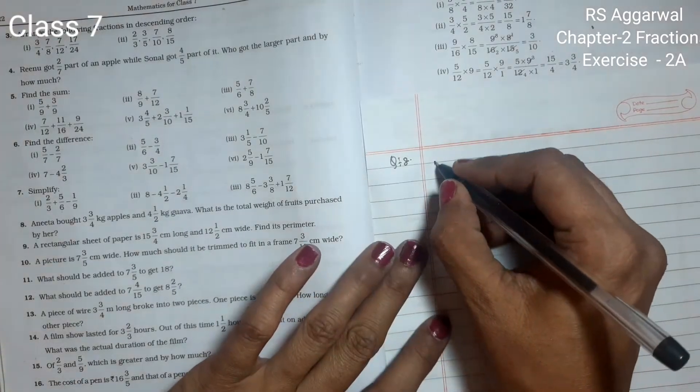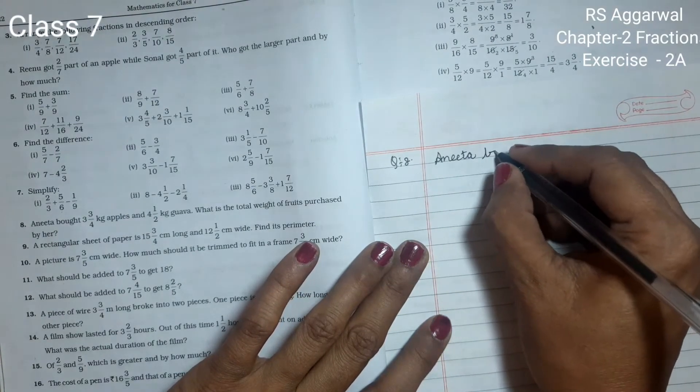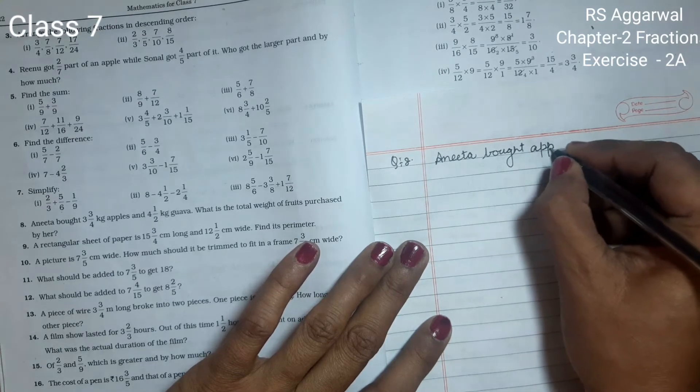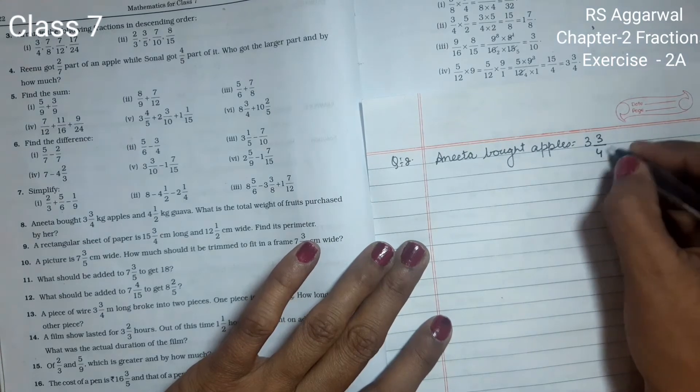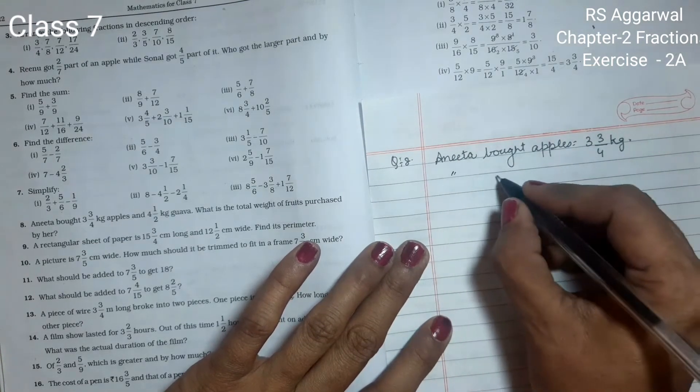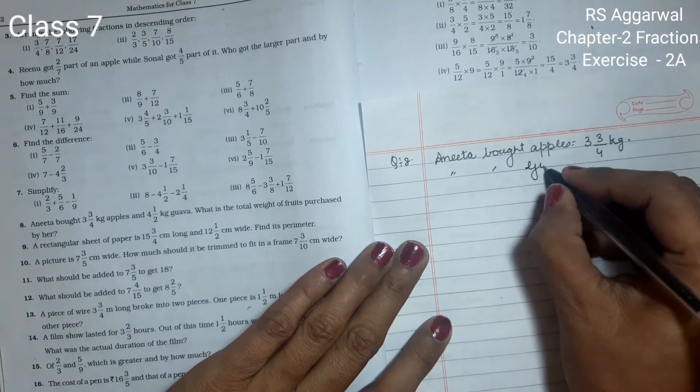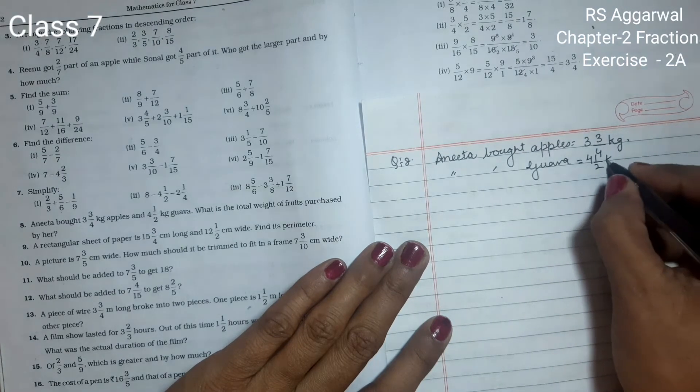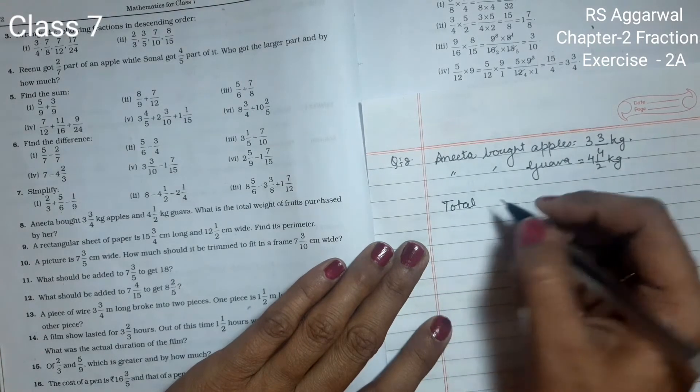First we will write: Anita bought apples 3 whole 3 upon 4 kg, and Anita bought guava 4 1 upon 2 kg. I'm going to find total weight of fruits.